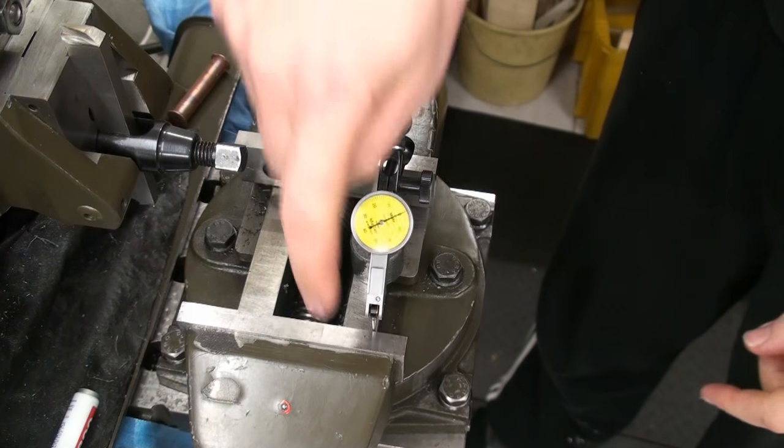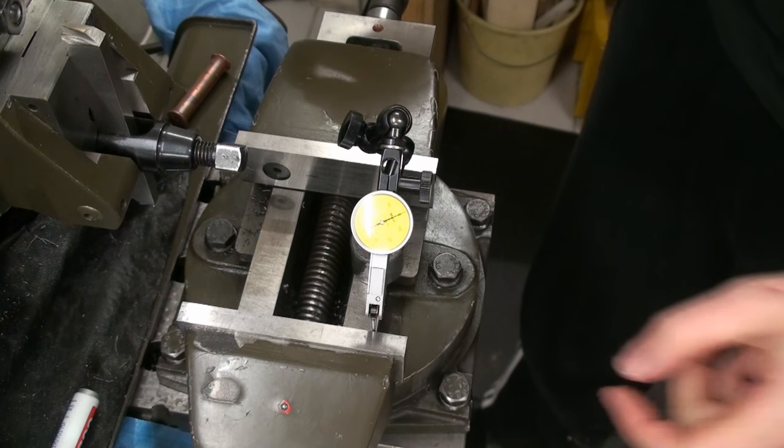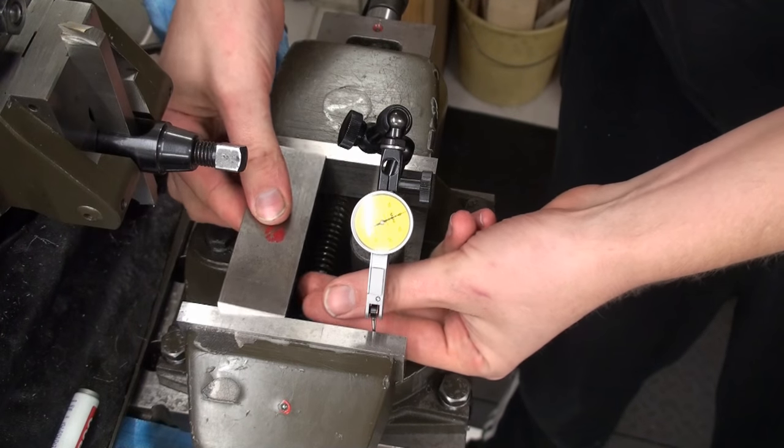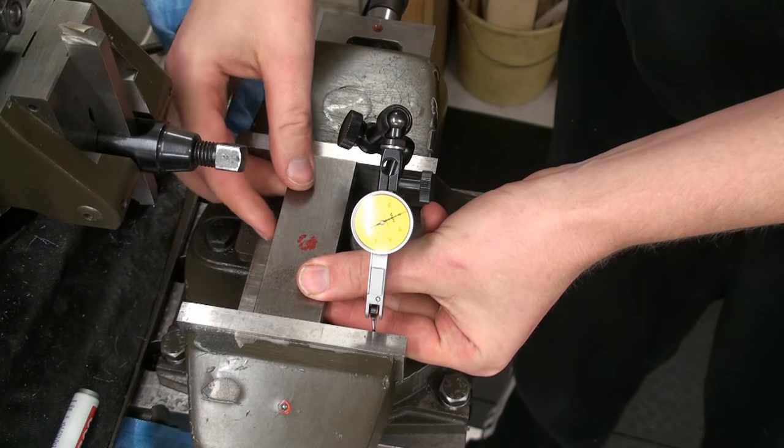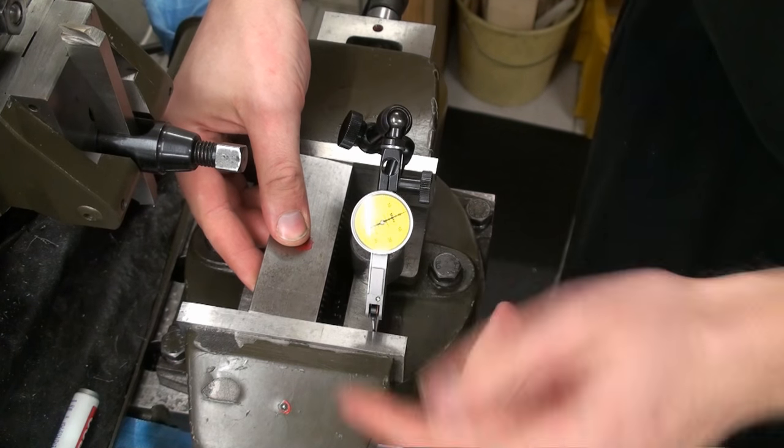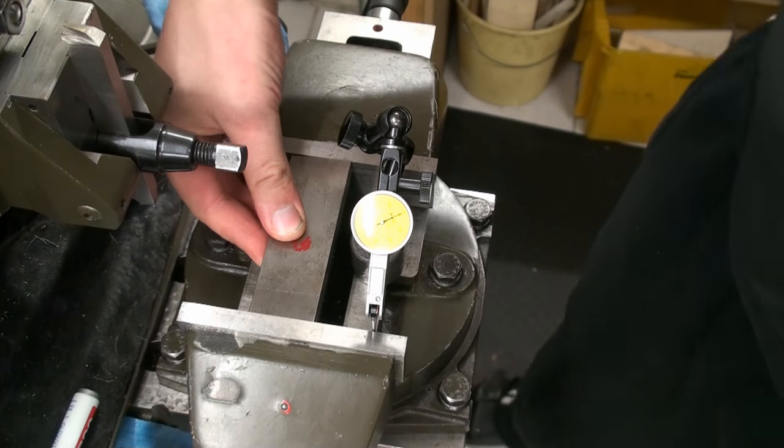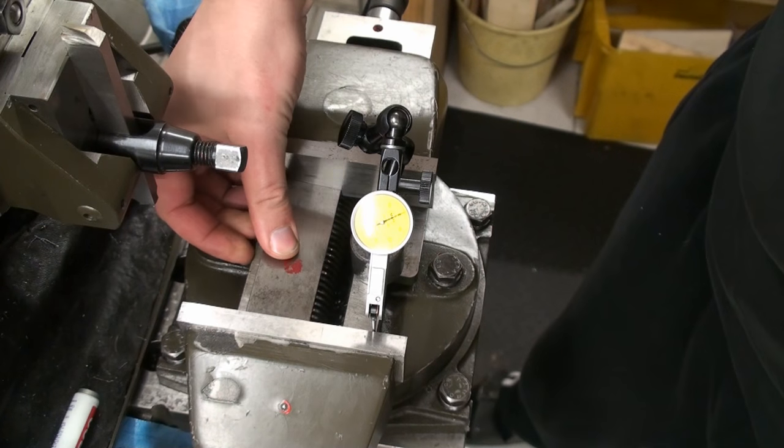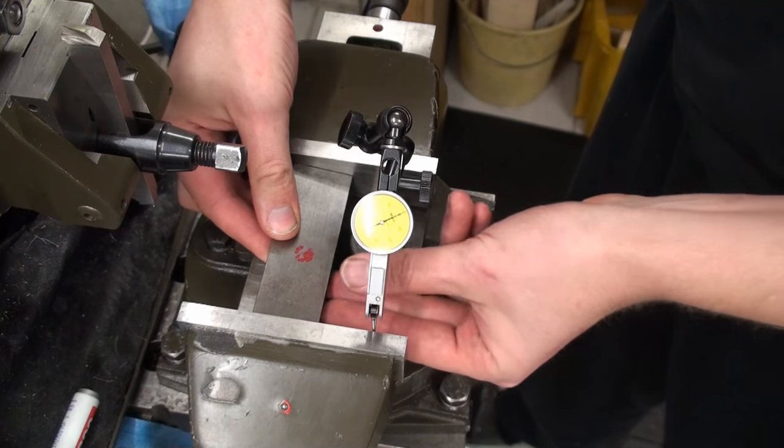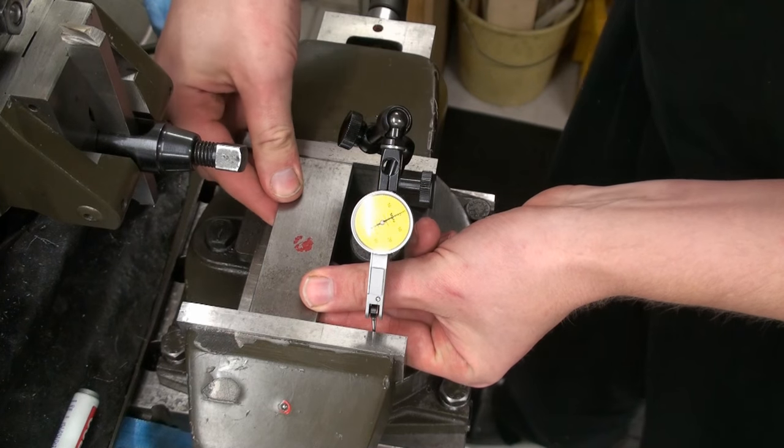You see the indicator touching up against the fixed jaw here. We zero it out, and now we take a piece of steel and we clamp it in the vise. We clamp it up pretty high because that way we get more leverage against the fixed jaw. This effect will be less if we clamp the part down here because the lever against the fixed jaw is shorter. Again, basic physics.